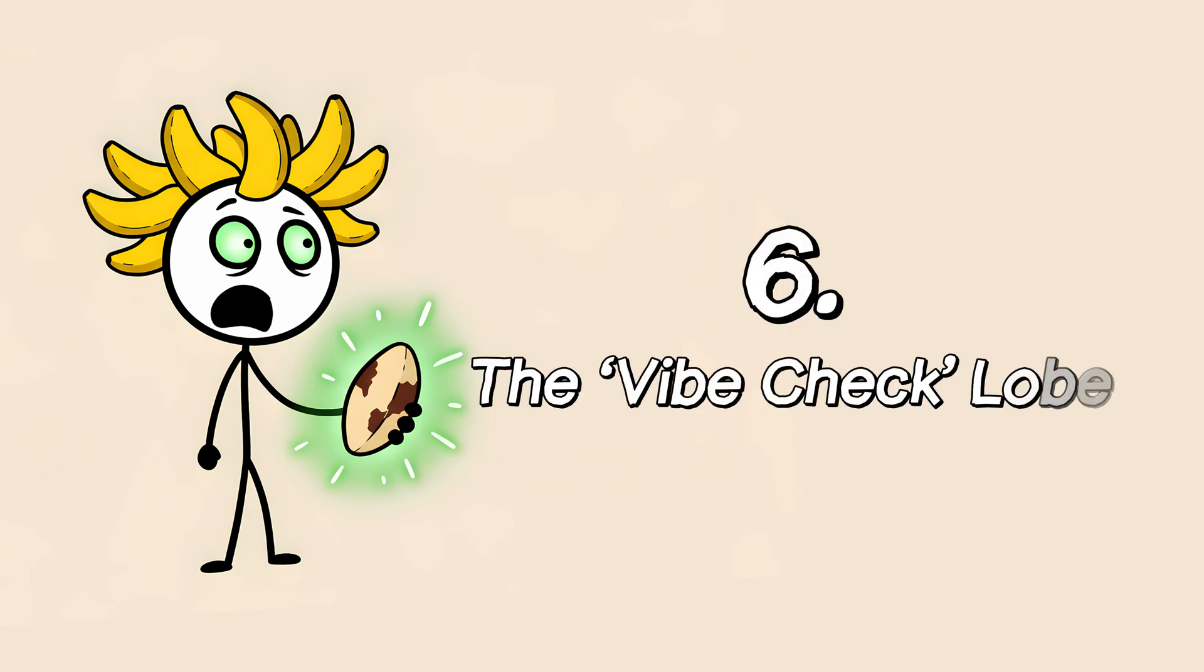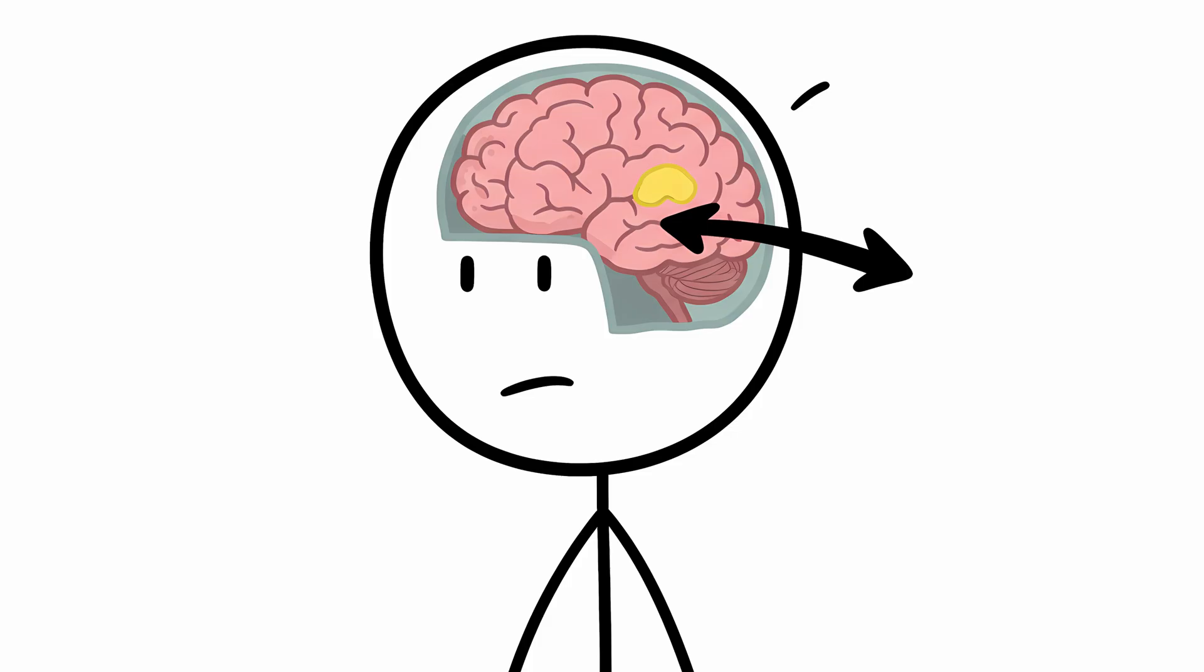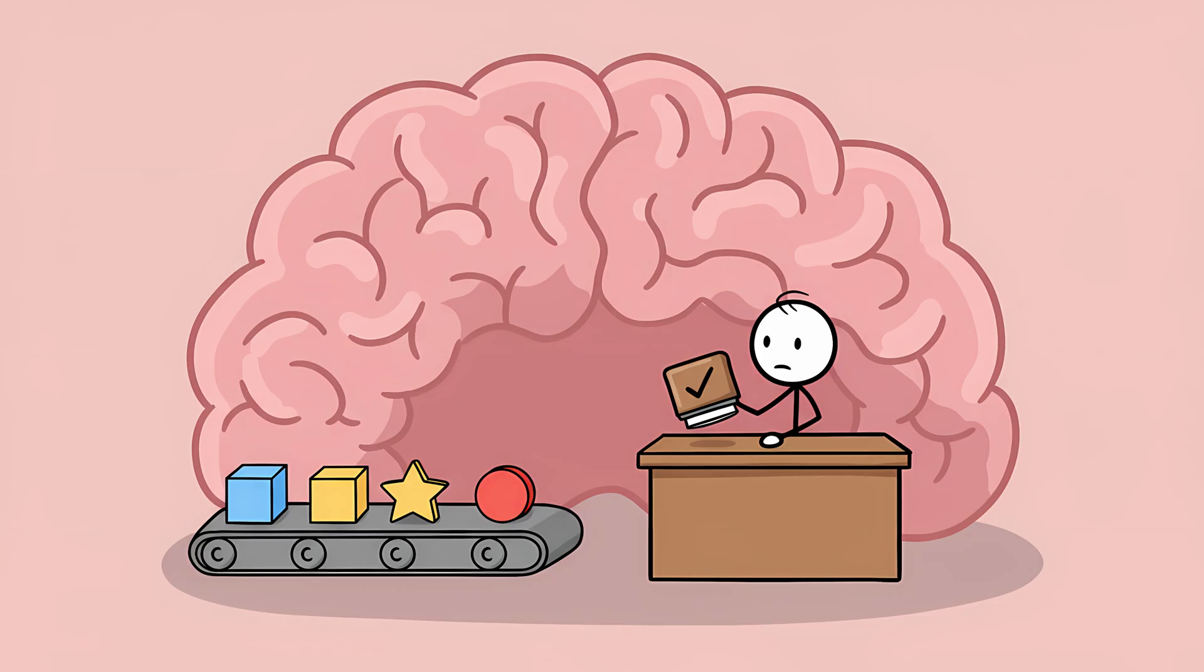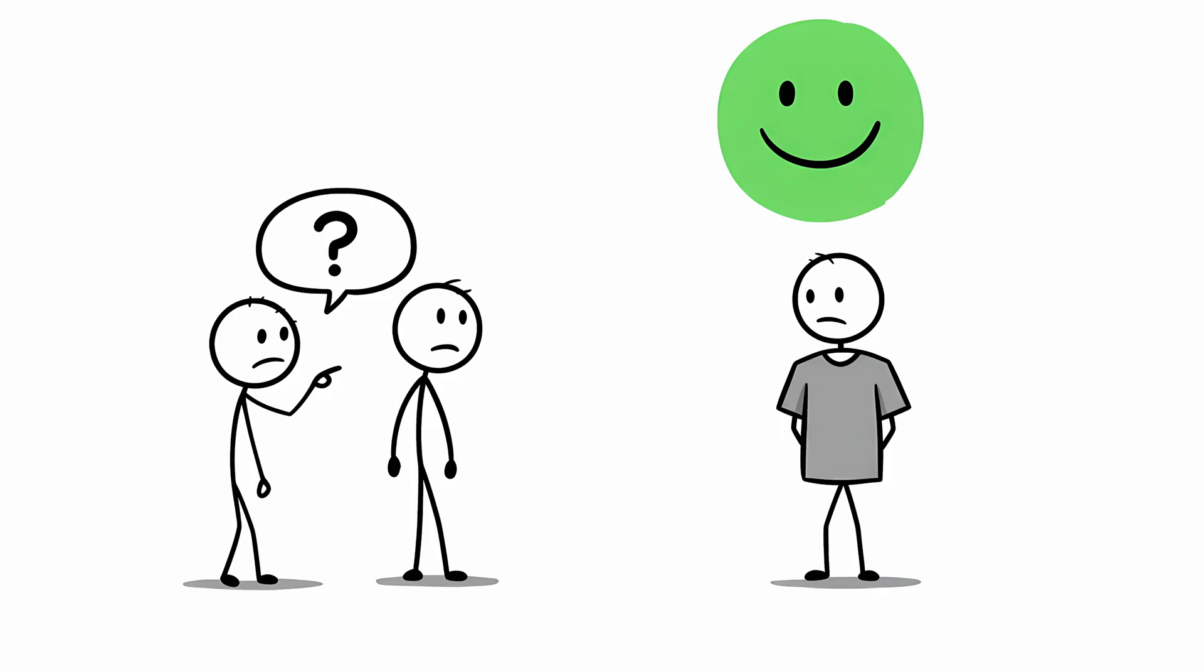Number six, the vibe check lobe. Let's get a bit more specific. Deep within your temporal lobe, the part of your brain located roughly behind your temples, is a region called the rhinal cortex. You can think of this area as your brain's official vibe checker. Its job isn't to remember the specific details of a memory, like what color shirt your friend was wearing. Its job is much simpler. It just handles the feeling of familiarity.